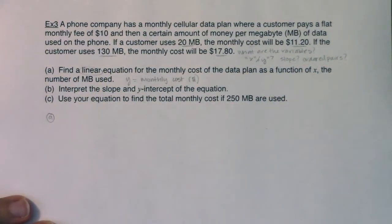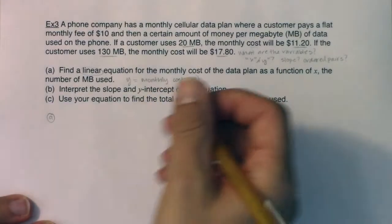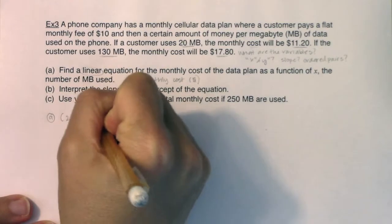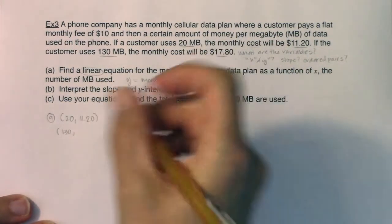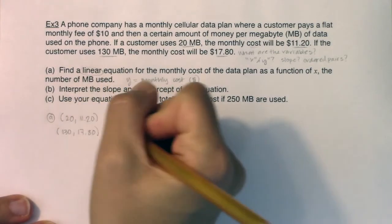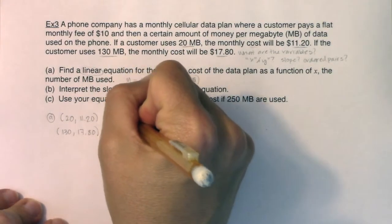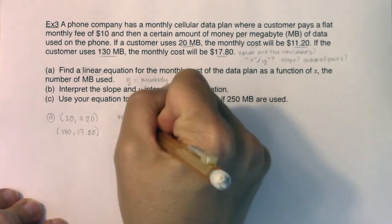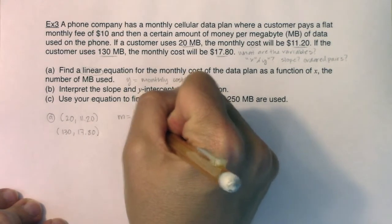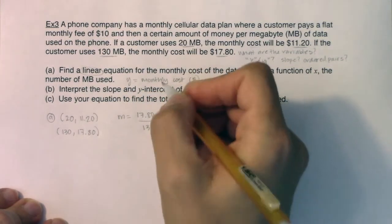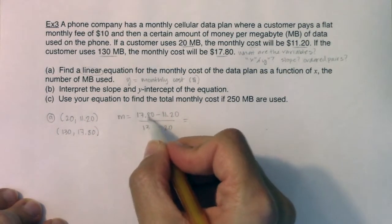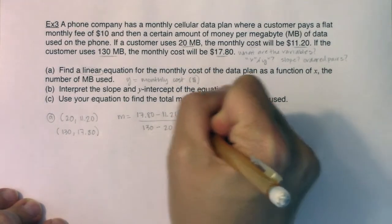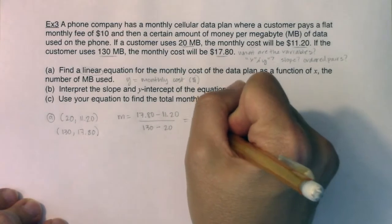I'm going to take note of my two ordered pairs. We had 20 and then $11.20. I also had 130 and $17.80. From here I can find the slope. This would be Y2 minus Y1 over X2 minus X1. Let's see, I could probably do this in my head. $17.80 minus $11.20 is $6.60, and 130 minus 20 is 110.